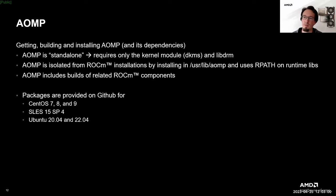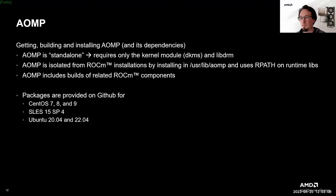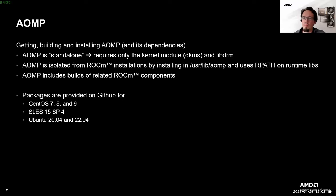For example, on my local development machine I have a ROCm installation to have access to management tools like ROCm SMI, but I build and develop in a separate AOMP installation. Building AOMP from source involves building some required ROCm components like the ROCA runtime, which provides the HSA implementation. We will look at the various components in more detail on the next slides.